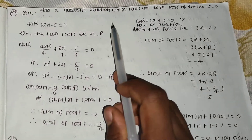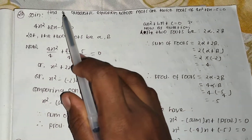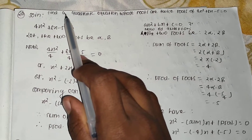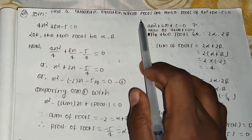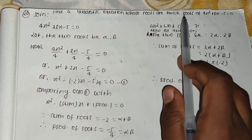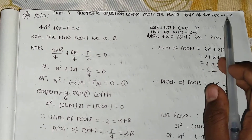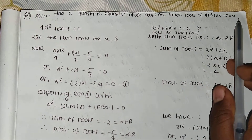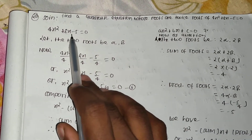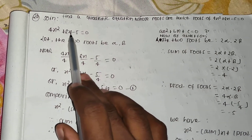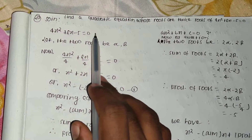Hello guys, welcome back to my channel Ramdan Education. Today's video is about finding a quadratic equation whose roots are twice the roots of 4x² + 8x - 5 = 0. The given equation is 4x² + 8x - 5 = 0.